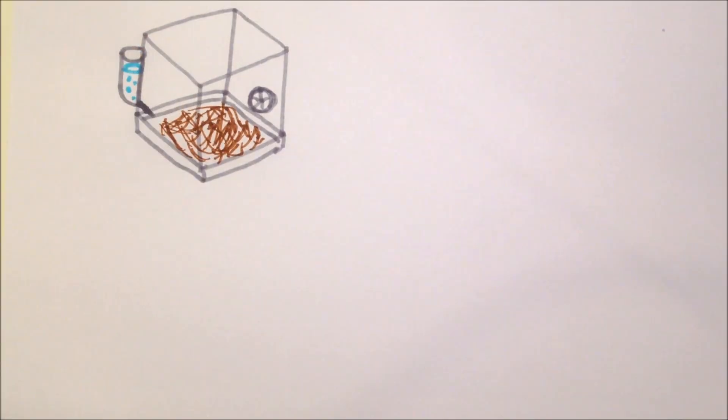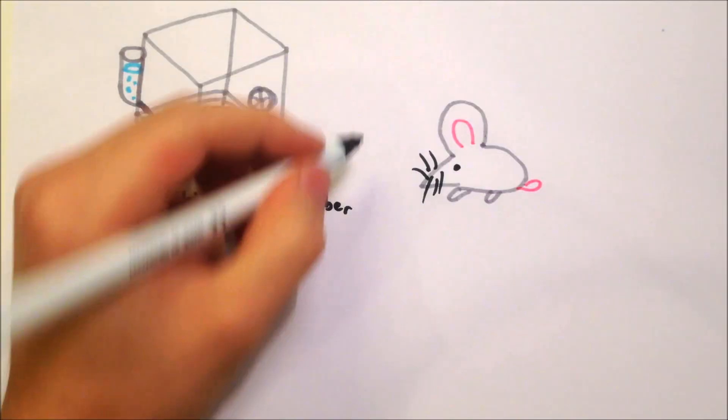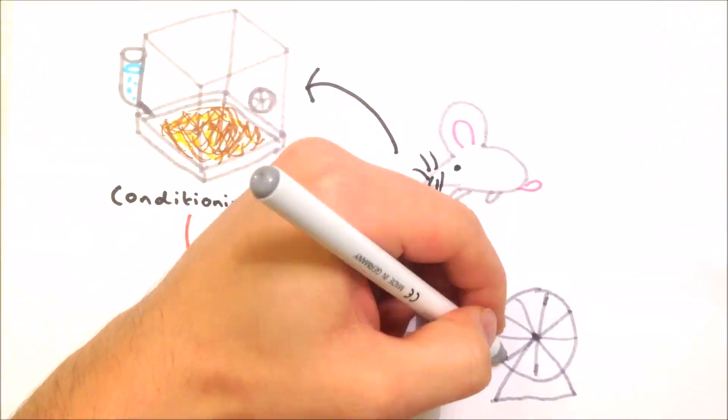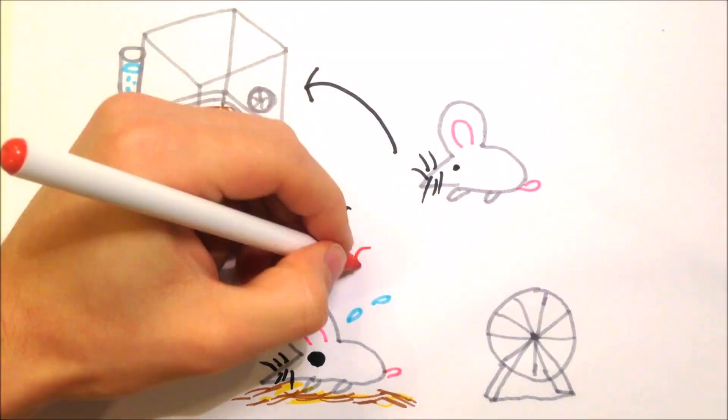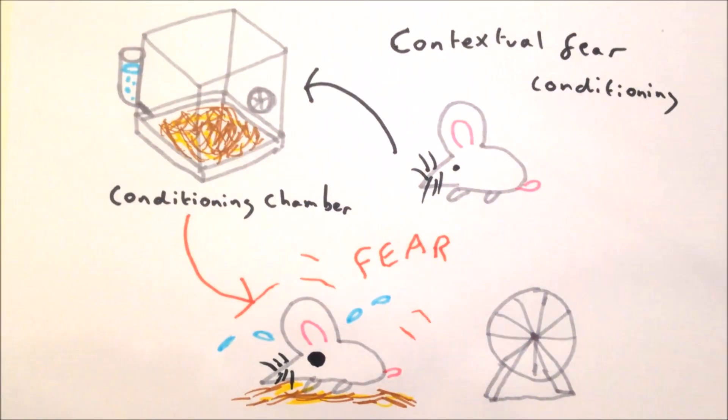After fear conditioning, mice not only express fear with the conditioned stimulus, but also when returned to the chamber in which the experiment took place. The mice have learnt not only to fear the stimulus, but also the context surrounding it as well. This is known as contextual fear conditioning.